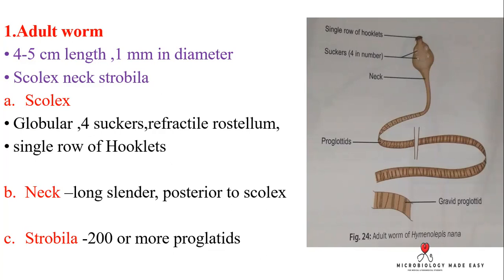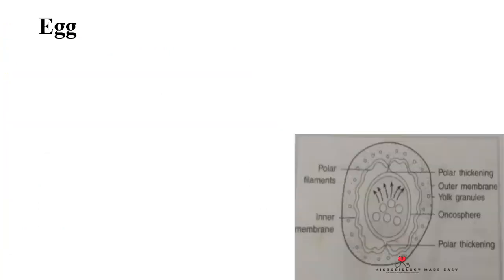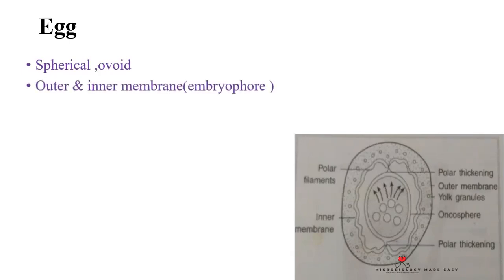The lifespan is about two weeks. The egg is oval or spherical in shape. It has an outer membrane and an inner membrane, and between the outer and inner membrane there are polar granules.